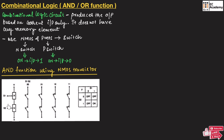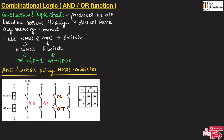Since we have 2 gate inputs, we get 4 combinations: 00, 01, 10, and 11. When the input is 00, both transistors are OFF, so switch S1 and S2 will be OFF — output is 0. When input is 01, S1 is OFF and S2 is ON; since they are in series, output is 0. For input 10, switch S1 is ON and switch S2 is OFF, so output is also 0.